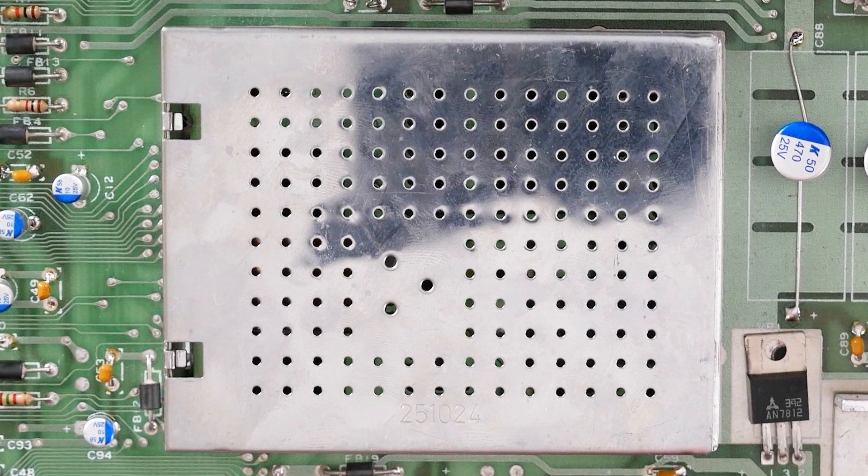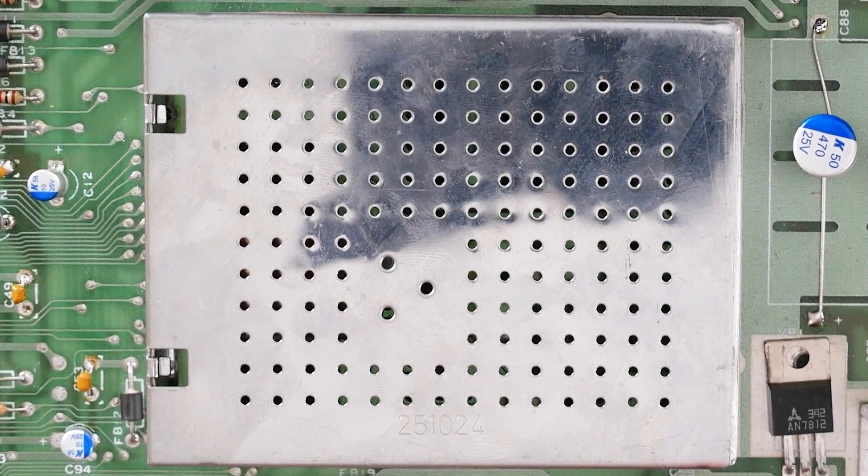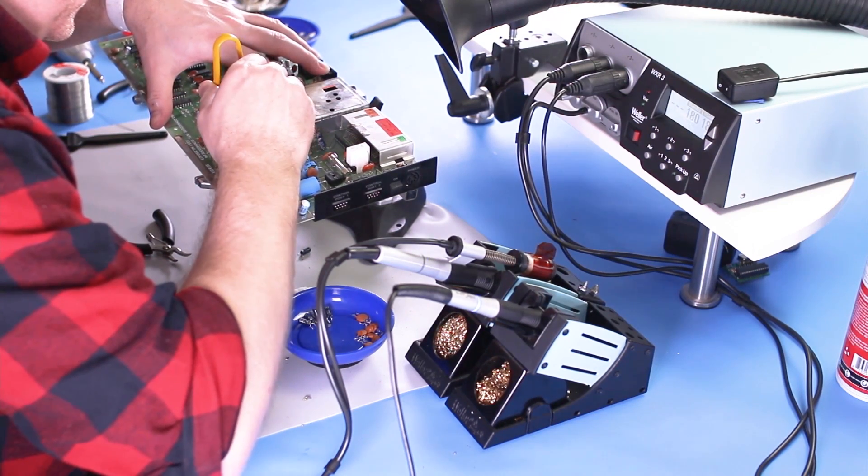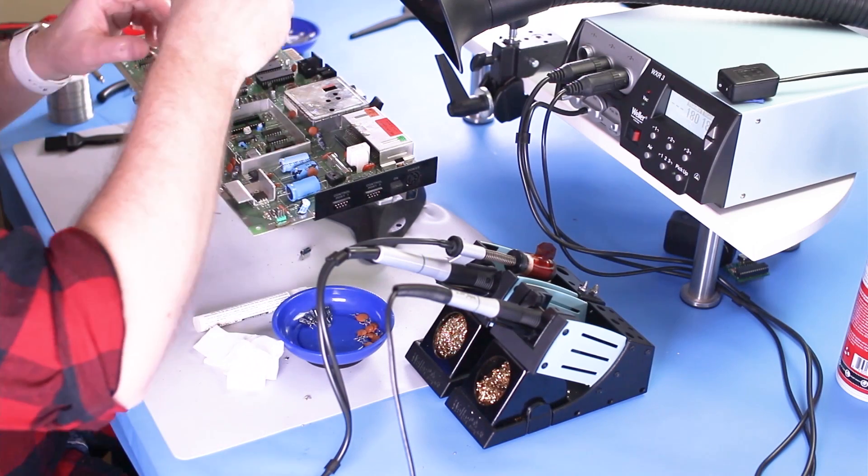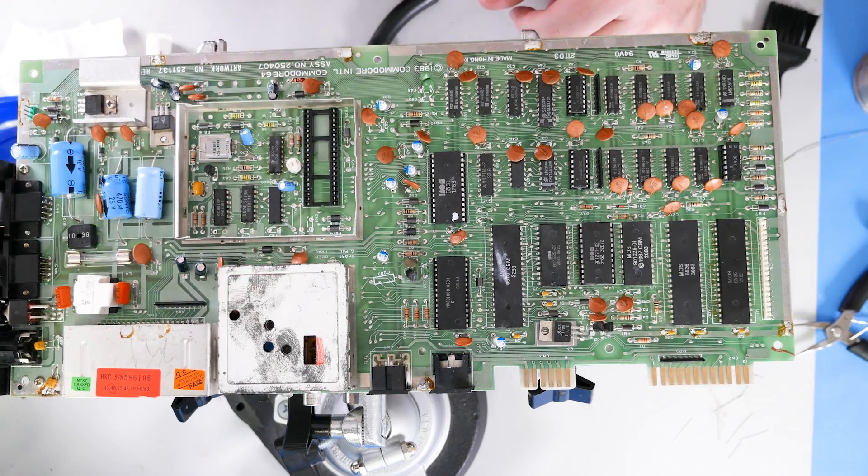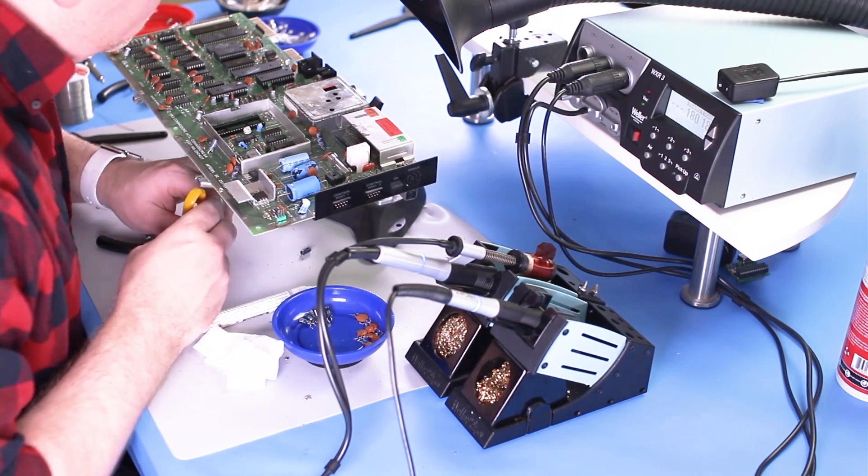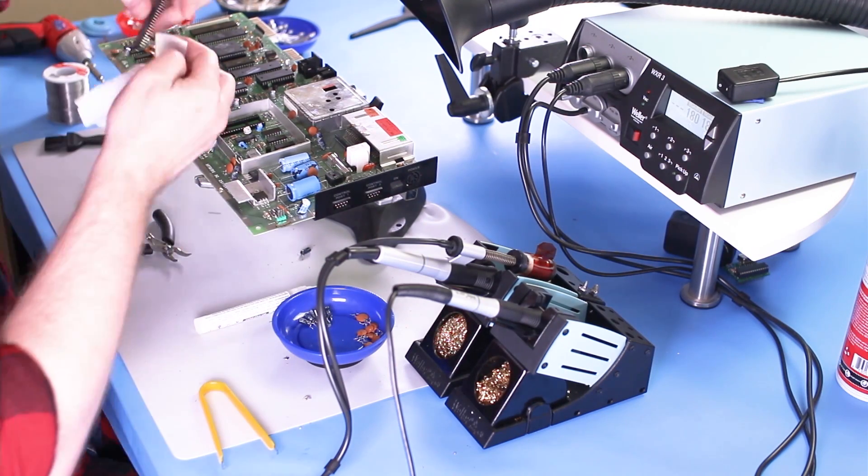There is a section on the C64 board which has an RF cage. It contains the video chip, also known as the VIC-2. I decided to take a few minutes now and just clean the old thermal paste off the chip. I'll add some new paste when I put the top of the RF cage back on.